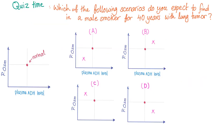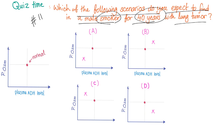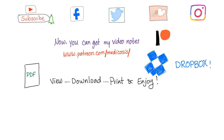Quiz time — this is the 11th question, and all previous questions are on the playlist. Which of the following scenarios do you expect in a male smoker for 40 years with a lung tumor? On the x-axis is the plasma ADH level and on the y-axis is the serum plasma osmolality. Let me know the answer in the comments below — the answer will be on my Facebook and in the next video. Don't forget to subscribe and hit the bell to get notified. Follow me on Facebook and please consider supporting this channel on Patreon at Patreon.com/medicosis. Thank you so much. Until next time, be safe, stay happy, and study hard.